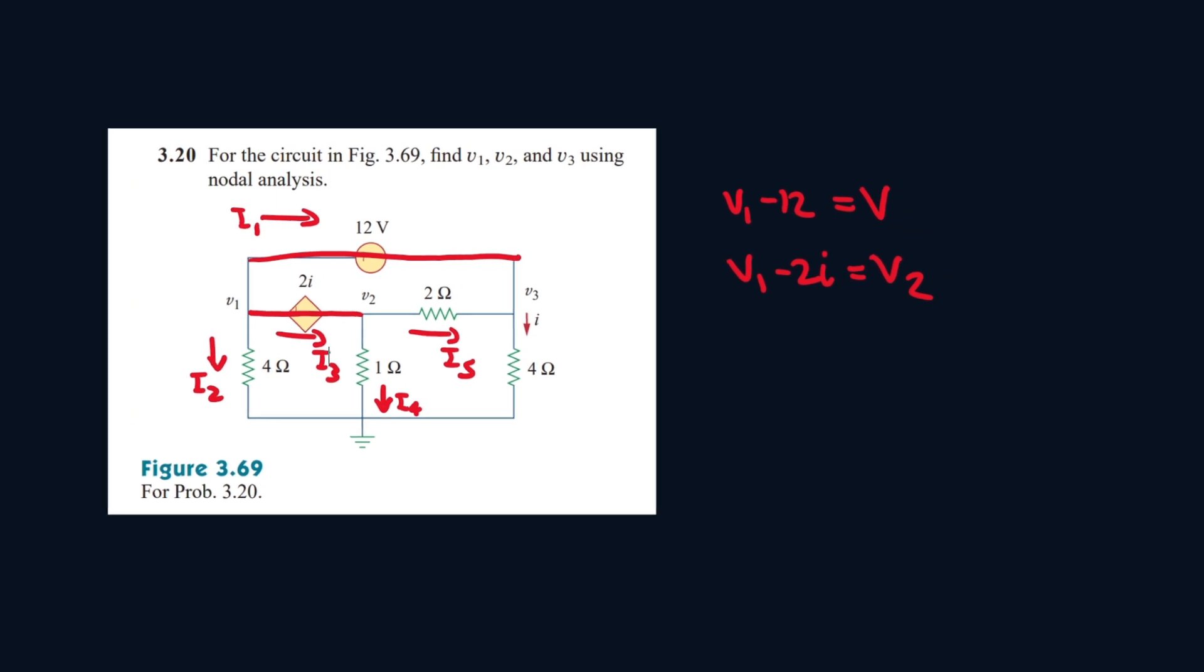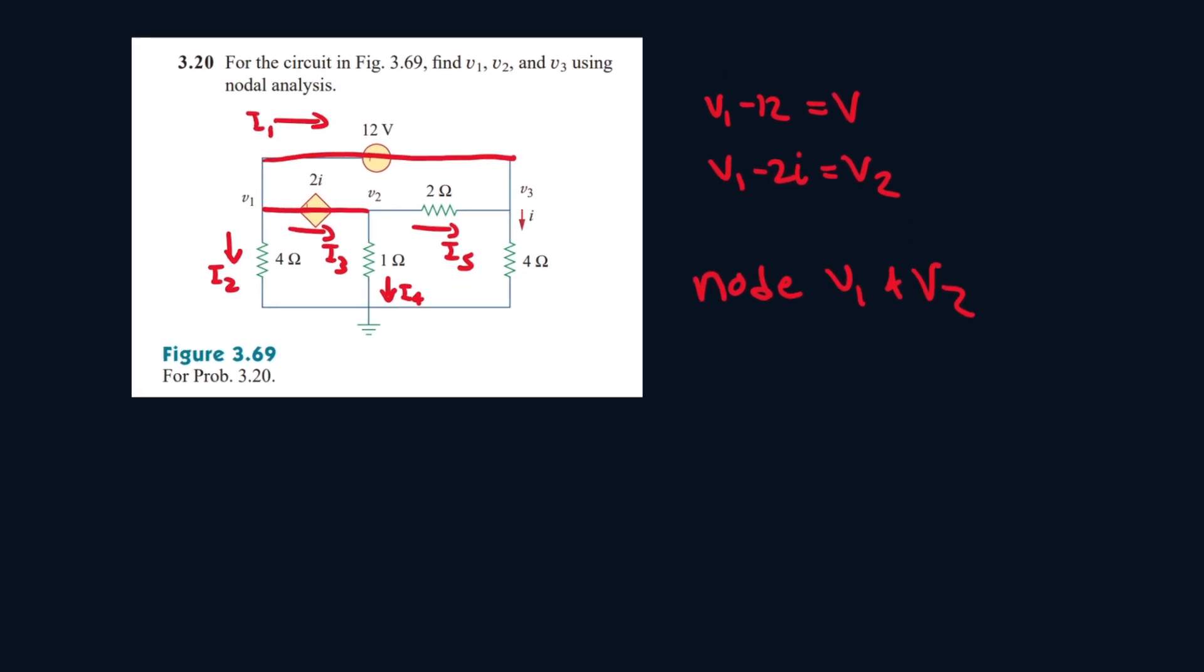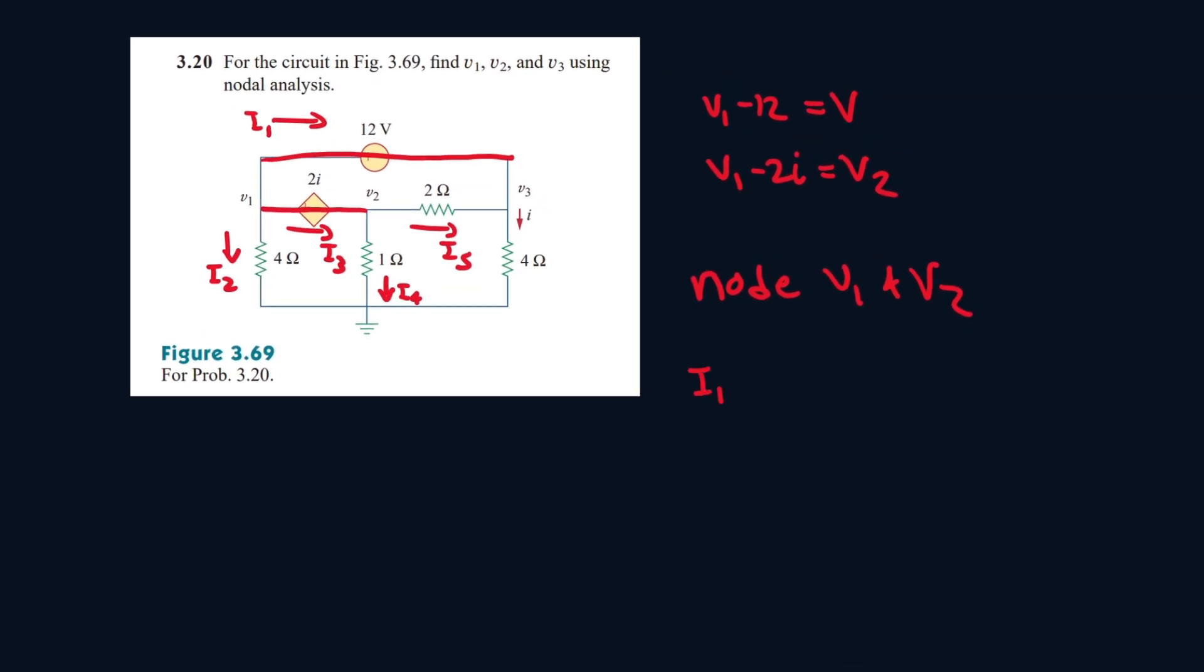So let's write an equation for node v1 and v2. So i1 and i2 are leaving. I just realized we don't need to include that i3 because remember this is one whole node. So yeah, so I think everyone's leaving, so it will be i4 plus i5. So that's the first equation that's done.